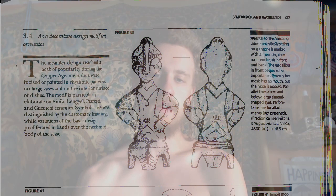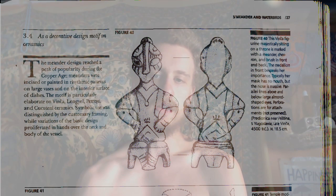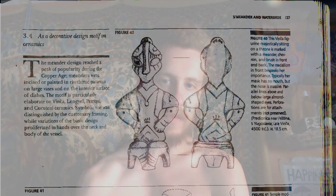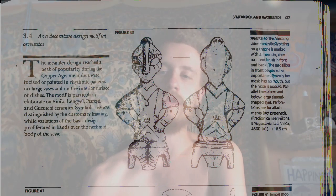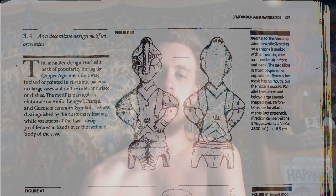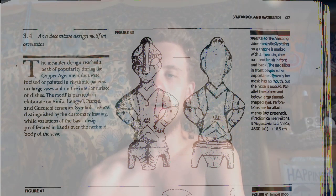And figure 40 — wow. She has the same medallion. There's the meander over the womb, meander on the back, plus this comb shape. This Vinca figurine, majestically sitting on a throne, is marked with meander, chevron, and brush in front and back. The medallion in front bespeaks her importance.